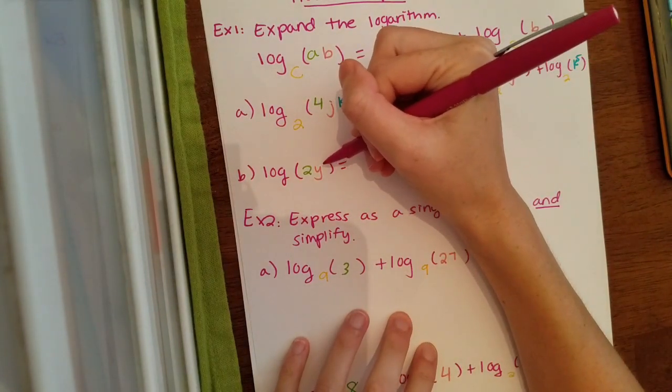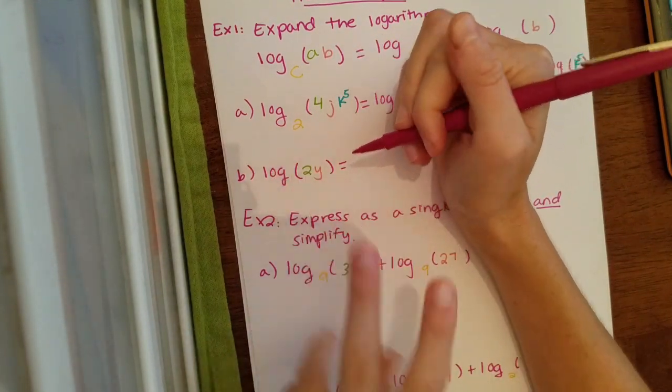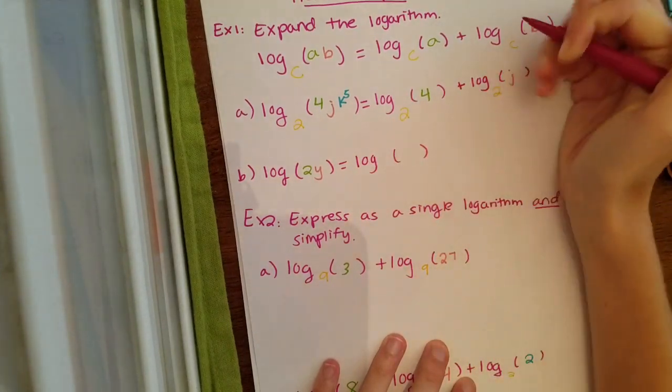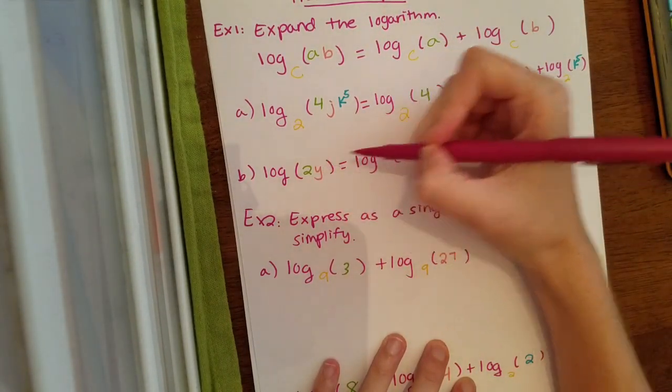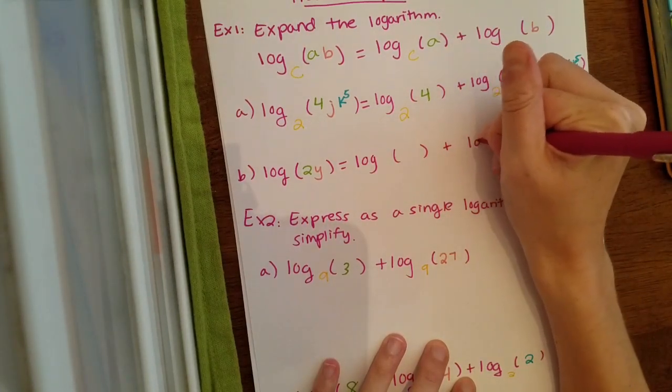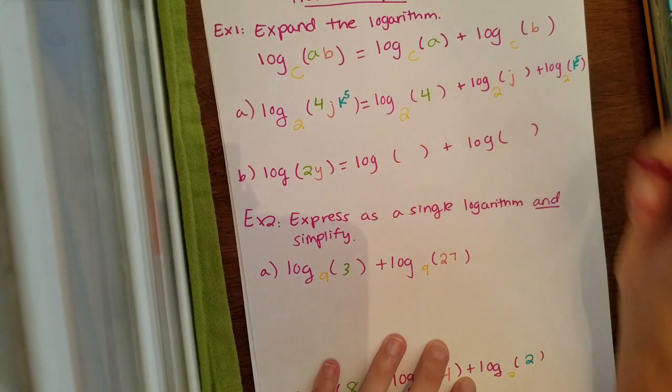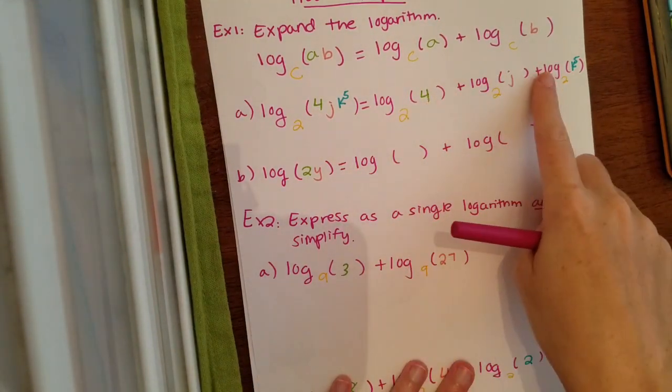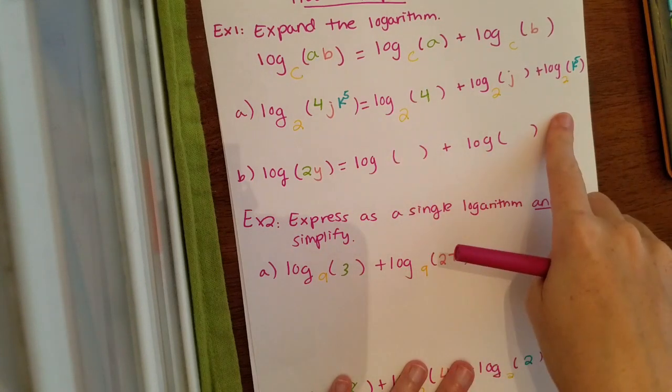So I have two things being multiplied, which means I'm going to have two nifty logs in my problem. So I'm going to set it up. And remember, when we have a product going on, we separate them with addition. All right, now before we filled in our four j and k to the fifth above, we filled in the base, but I don't see a base.